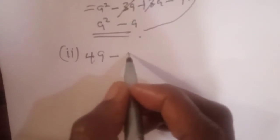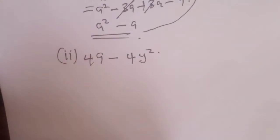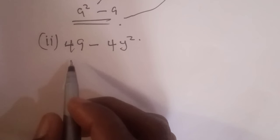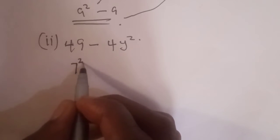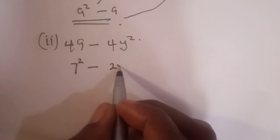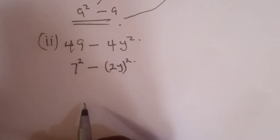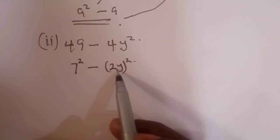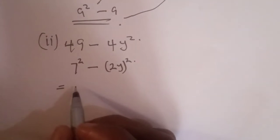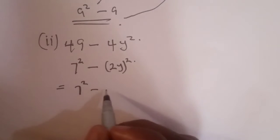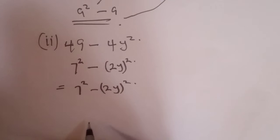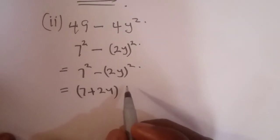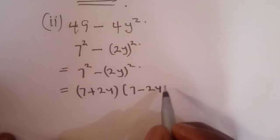Question two: 49 minus 4y². The square root of 49 is 7, so we have 7², and the square root of 4y² is 2y, so we have 2y². This means 49 minus 4y² equals 7² minus (2y)², which can be written as (7 + 2y) multiplied by (7 minus 2y). That is the answer.